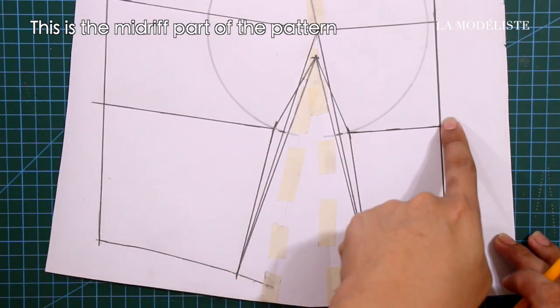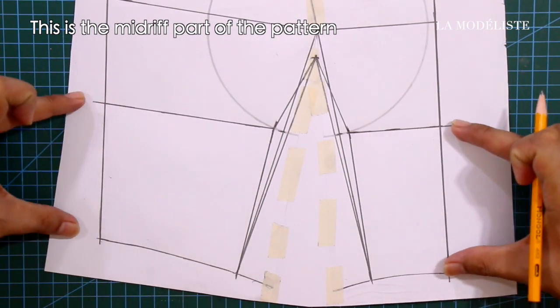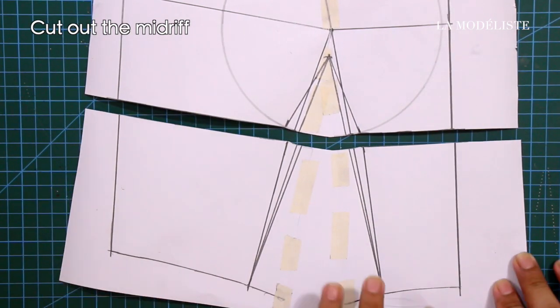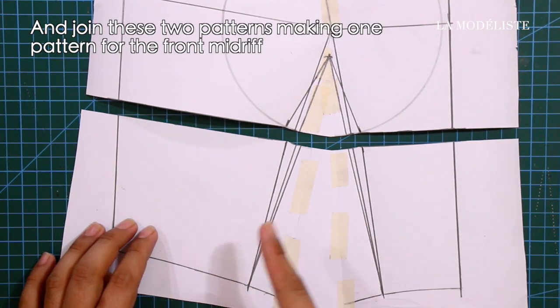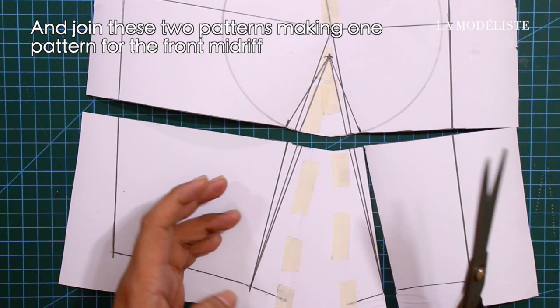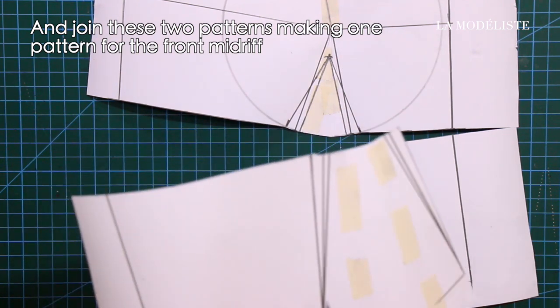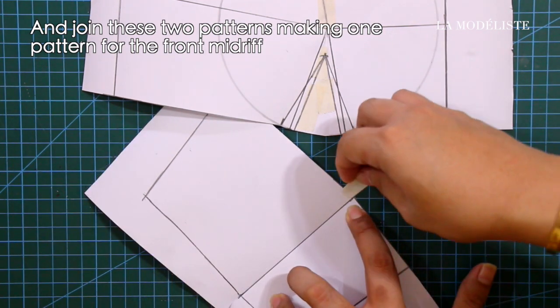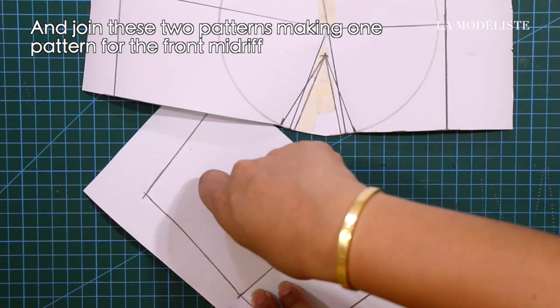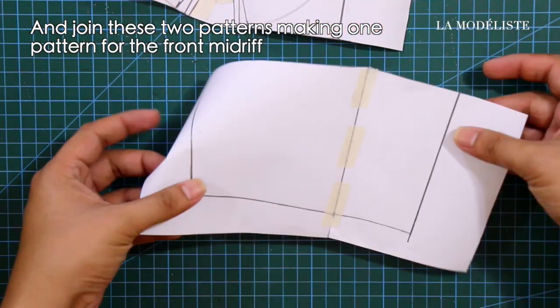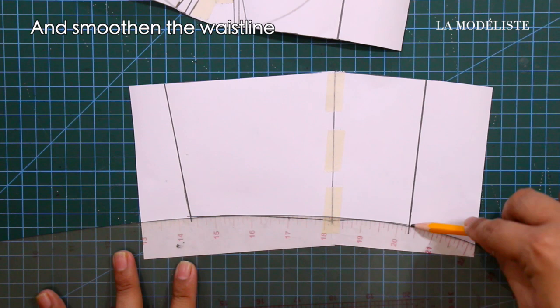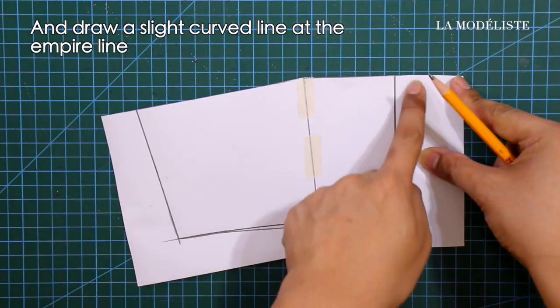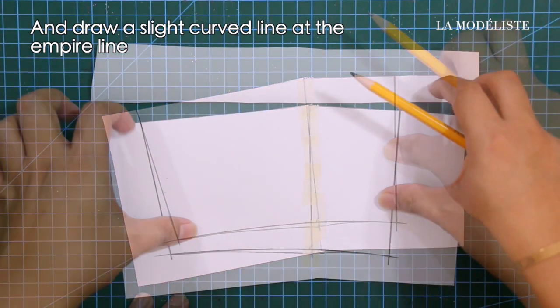And square in the lines for the empire line. And this is the midriff part of the pattern. Next, cut out the midriff and join these two patterns, making one pattern for the front midriff. And smoothen the waistline. Next, draw a slight curve line at the empire line like this one.